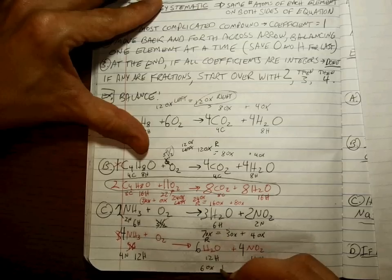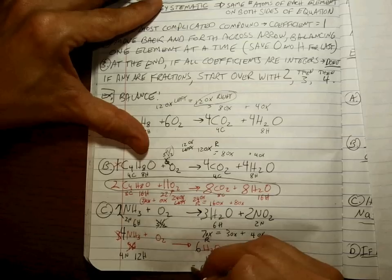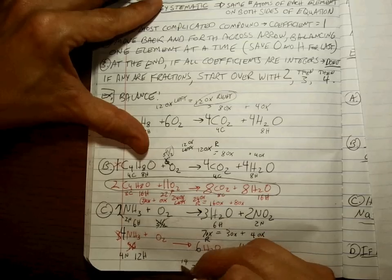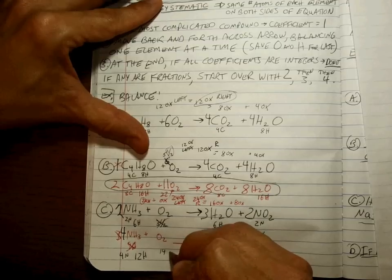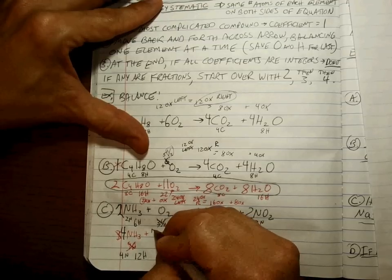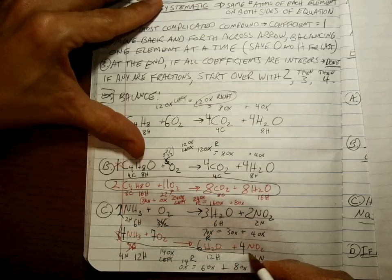To get 14 oxygens on the left, that has to be a 7. That's it. That's our balanced equation.